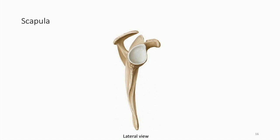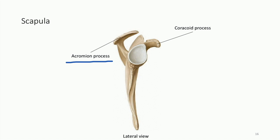To finish off the scapula, from a lateral view we can find the acromion process and the coracoid process. In between them there's a depression called the glenoid fossa. This will become very important when thinking about the humerus and the attachment of the arm to the scapula to form the shoulder joint.